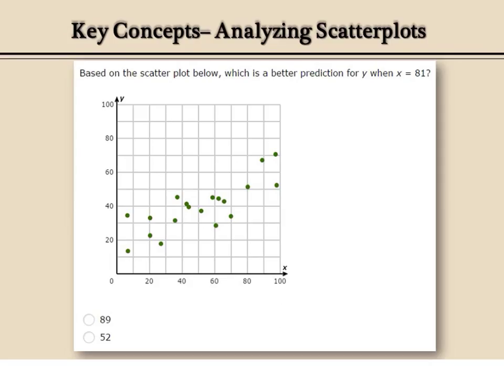There are times when you're going to have to draw conclusions from the information from a scatter plot. This one is asking, based on the scatter plot, which is a better prediction for Y when X is 81?